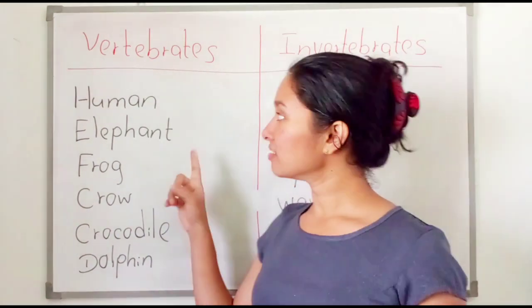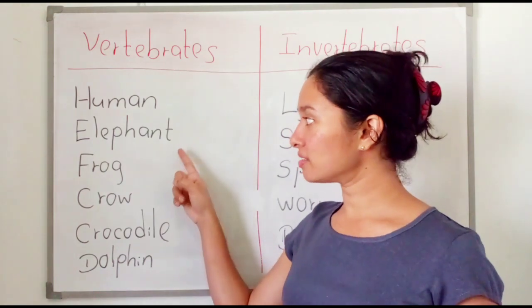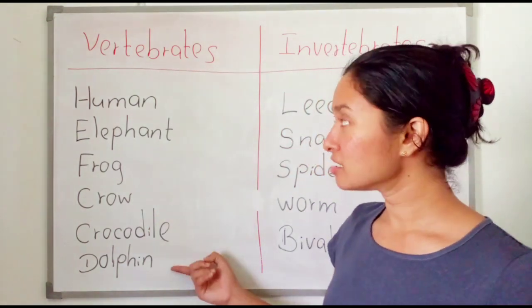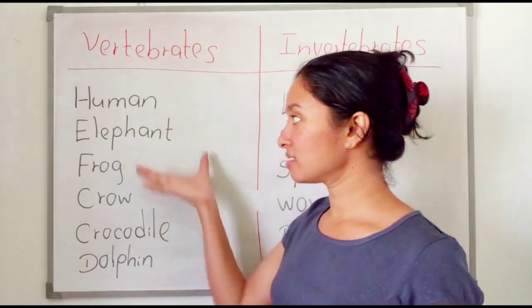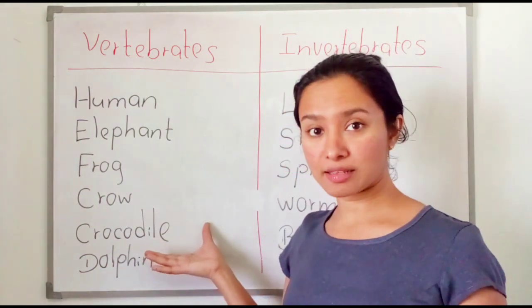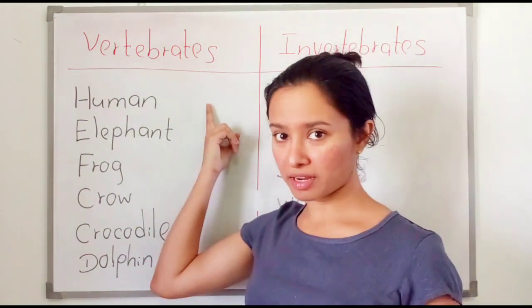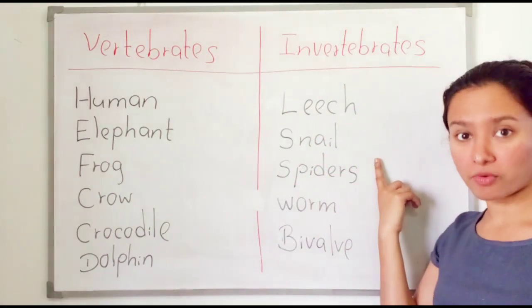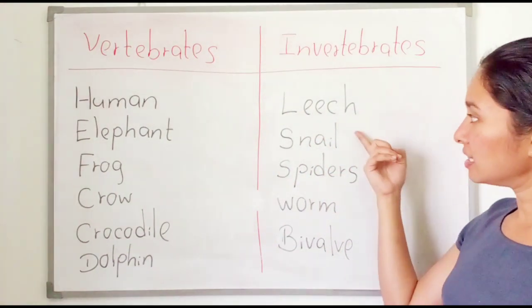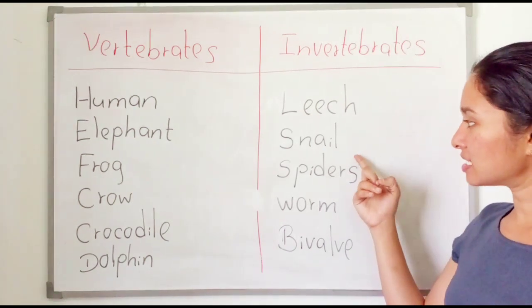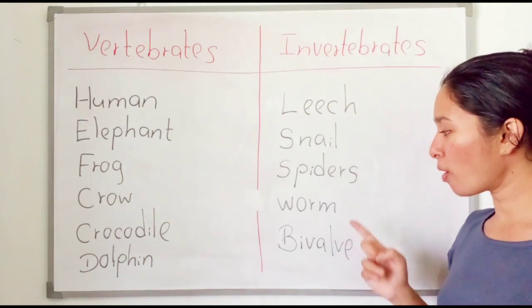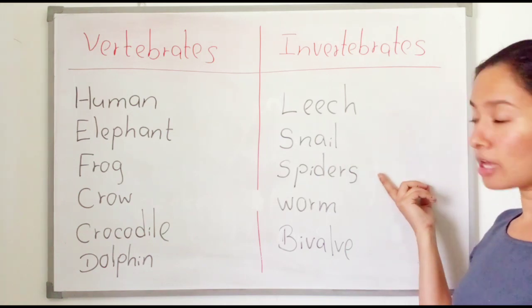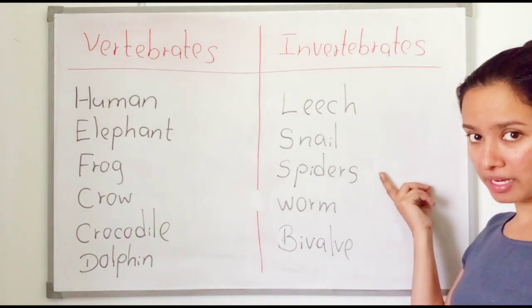Look at these examples. Human, elephant, crow, crocodile, and turkey — those are examples of vertebrates. And leech, snails, spiders, worms, and bivalves — these are examples of invertebrates. Invertebrates are the animals which do not have a backbone; vertebrates are the animals which have a backbone.